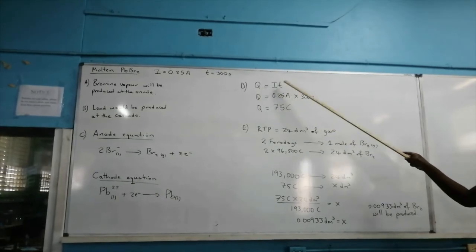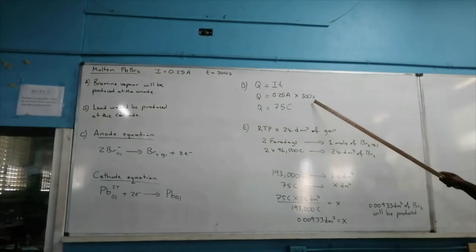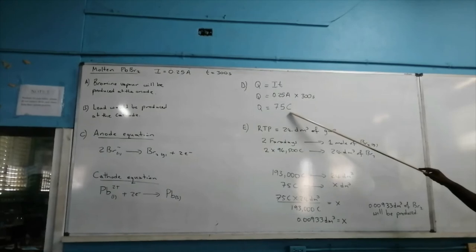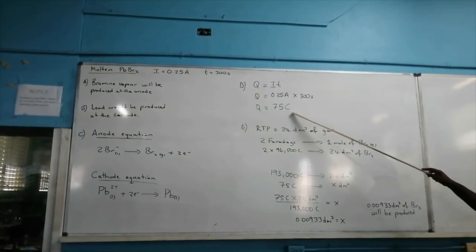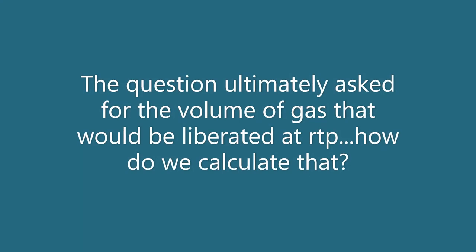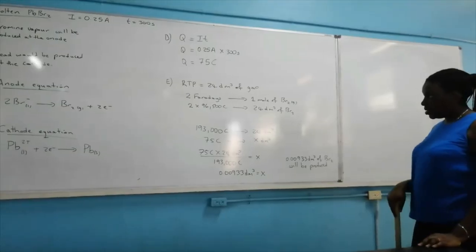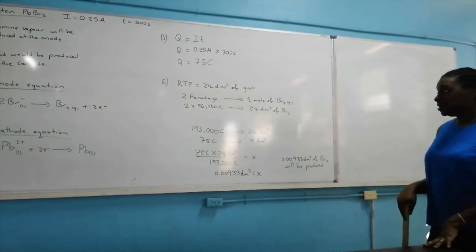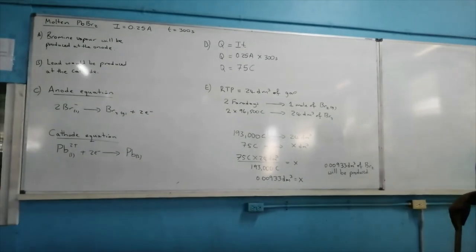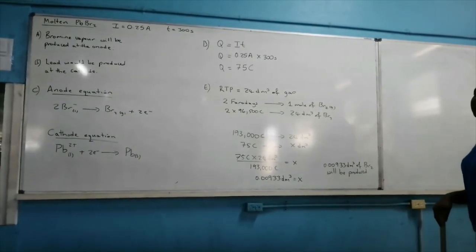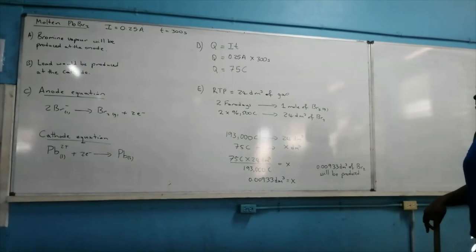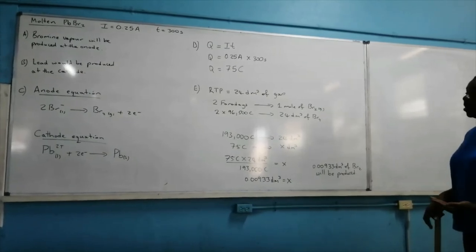We calculate the quantity of electrical charge: 0.25 amperes for 300 seconds gives 75 coulombs of charge. From the anode equation, 2 moles of electrons are liberated from bromide ions, which is equivalent to 193,000 coulombs of charge being required to liberate 1 mole of bromine vapor.